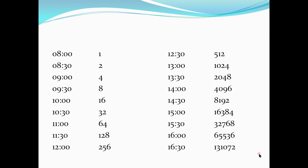...at 8:30 it's two bacteria, at 9:00 it's four, at 9:30 it's eight, at 10:00 it's 16, and this exponential growth with its doubling time goes on. If environmental conditions are favorable for the growth of bacteria, the number of bacteria constantly increases and results in large colonies of bacteria.